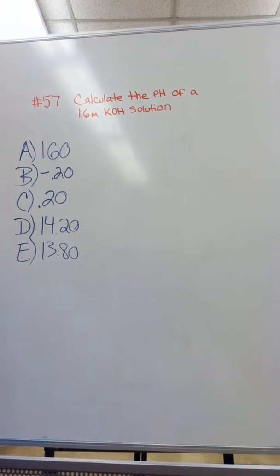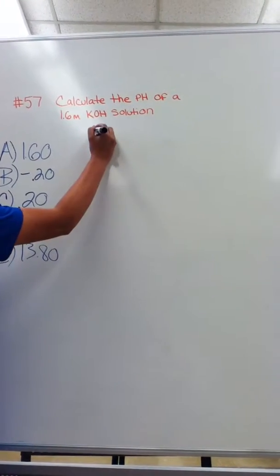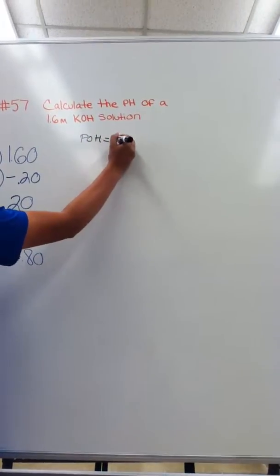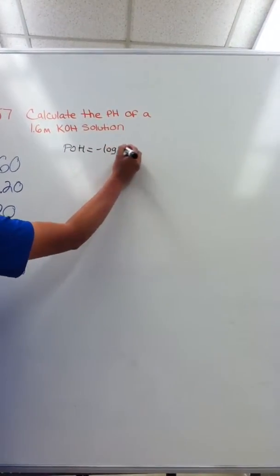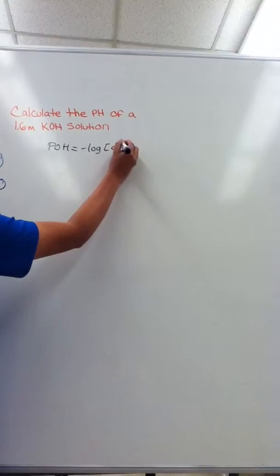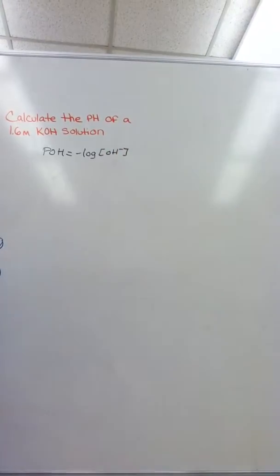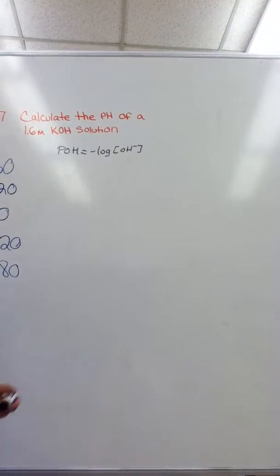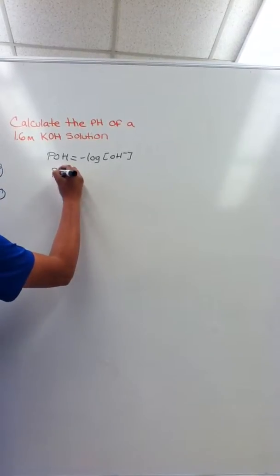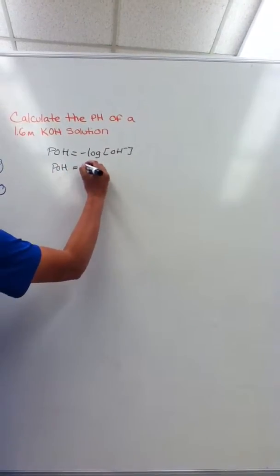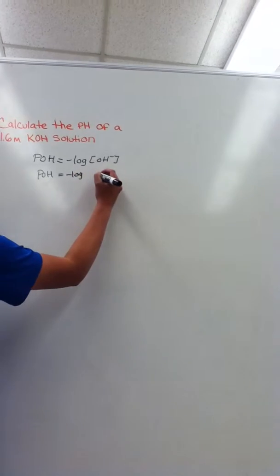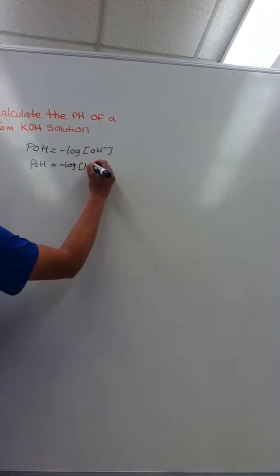What you're going to do is start with the formula POH is equal to negative log of OH minus. Go ahead and plug that in and it's going to be POH equal to negative log of 1.6.